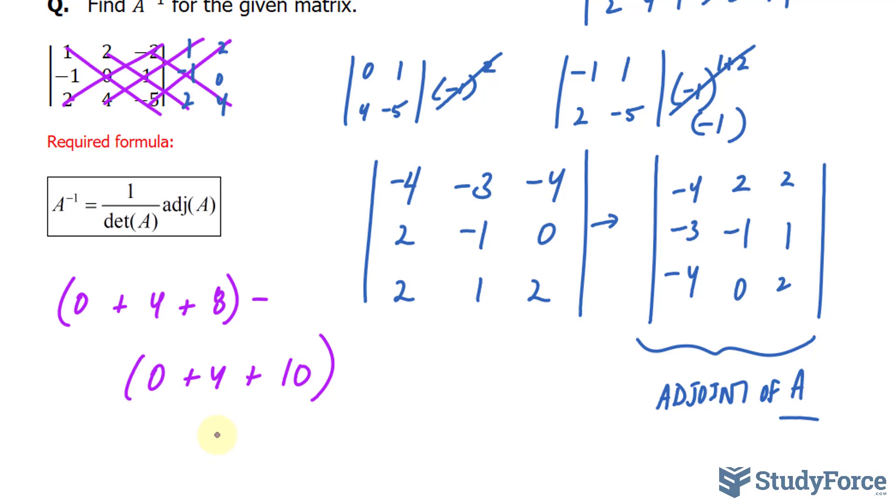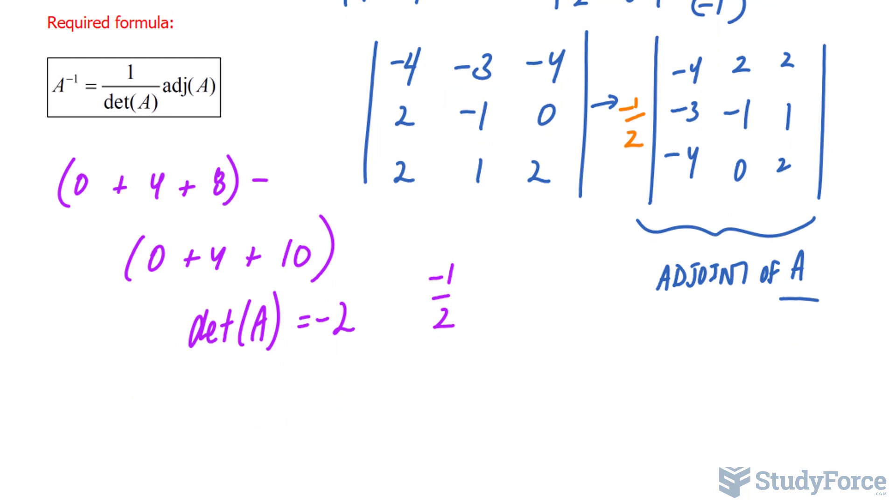According to the formula, we now reciprocate, where we end up with negative 1 over 2, and we'll multiply negative 2 to this matrix. This means that every element here will be halved and multiplied by negative 1.